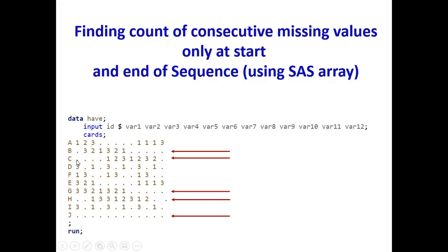Or count of missing values at the beginning, as you can see in the case of ID equal to C. When the ID is H, we have missing values in the beginning and also at the end — two at the start and two at the end, totaling four. When ID is J, all values are missing. We will also ignore a single missing value at the beginning or end; we need at least two consecutive missing values.